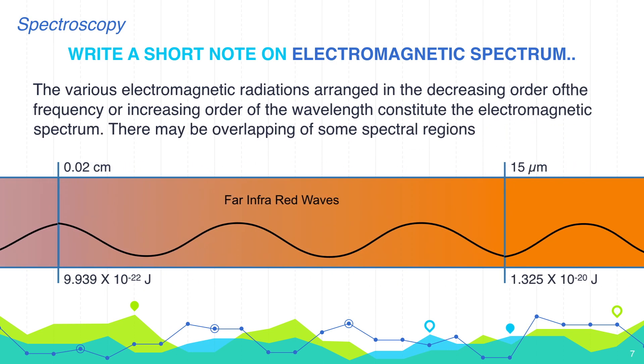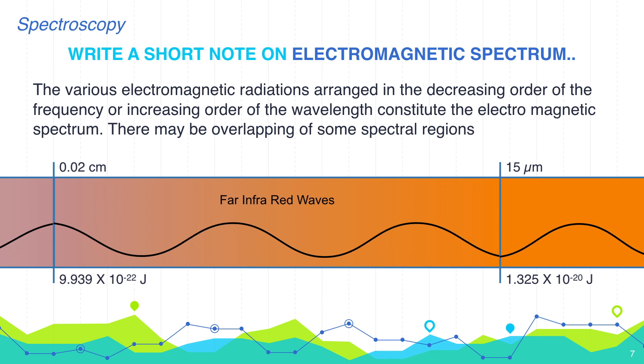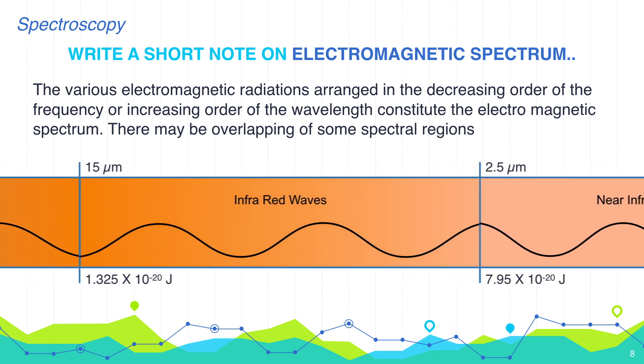When we move even lower wavelength and higher energy next comes far infrared region. Actually, it is low energy infrared. It is named as far because it is far from the visible range. Next comes the actual infrared region which is from 15 micrometer to 2.5 micrometer. This radiation is having enough energy to bring electronic transitions in molecules. That's why this range is used in IR spectroscopy.